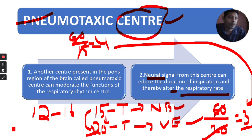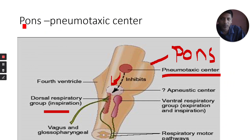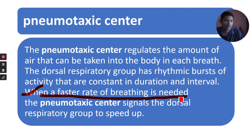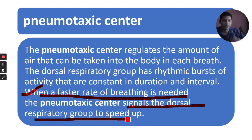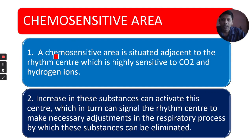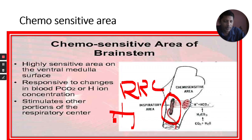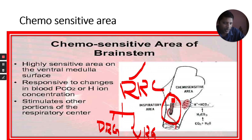When a faster rate of breathing is needed — for example during exercise — the pneumotaxic center sends signals to the dorsal respiratory groups to speed up breathing. Now coming to the chemosensitive area: the chemosensitive area is situated adjacent to the respiratory rhythmic center. The respiratory rhythmic center contains the dorsal respiratory group and ventral respiratory group of neurons. Adjacent to the respiratory rhythmic center in the medulla oblongata is the chemosensitive area.